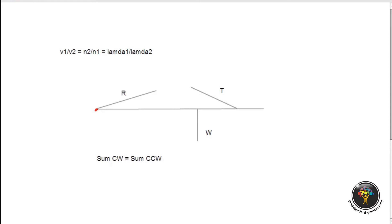In the first question, the phrase 'by equating the appropriate torques' is code for saying the sum of clockwise torque forces equals the sum of counterclockwise torque forces. So in Figure 1, we need to find the magnitude of T.